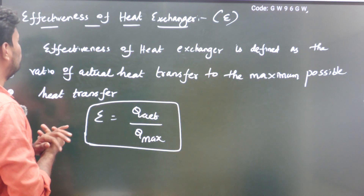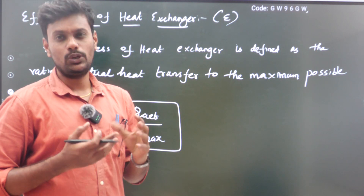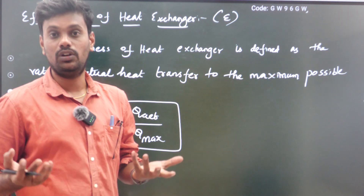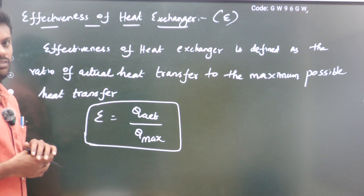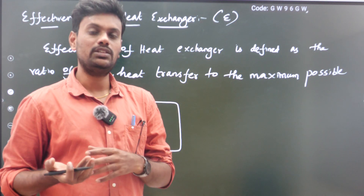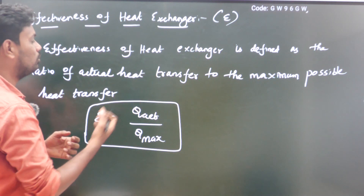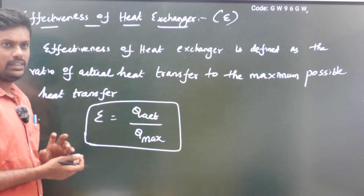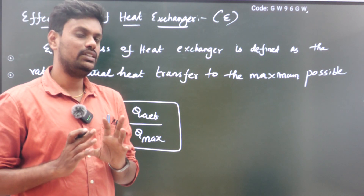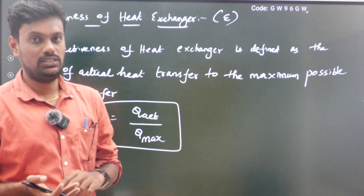Next is the effectiveness of the heat exchanger, which is also a very important topic. Effectiveness is defined as the ratio of actual heat transfer to the maximum possible heat transfer. It is denoted by the symbol eta, which equals Q actual divided by Q maximum. This tells us how much heat is actually being transferred compared to the maximum possible.